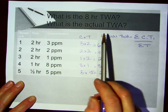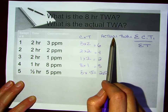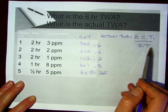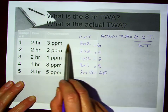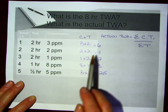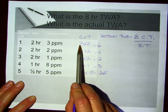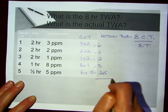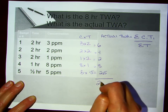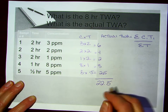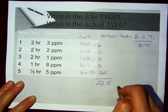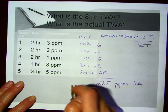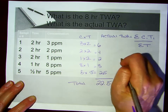Our formula for our actual time-weighted average is the sum of concentration times time over the sum of time. So I still have my same calculation formula here — 3 parts per million times 2 hours, 2 parts per million times 2 hours. And when I add these together, I'm going to come up with 22.5 parts per million hours as my total.